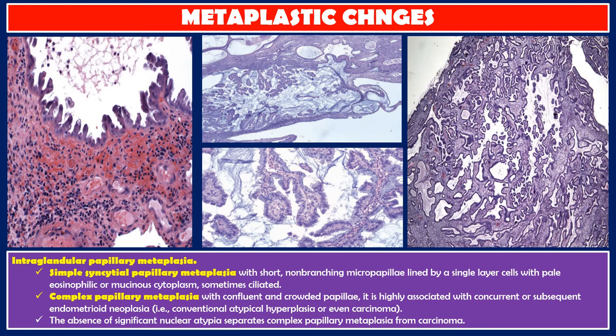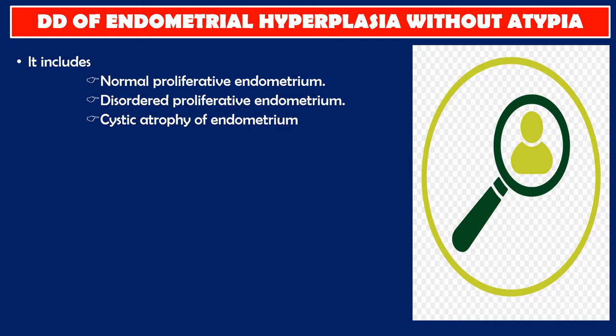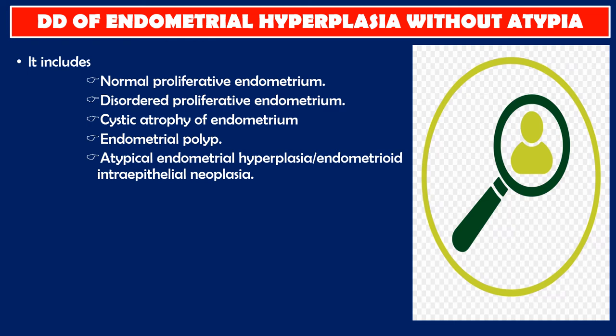Differential diagnosis of endometrial hyperplasia without atypia includes: normal proliferative endometrium, disordered proliferative endometrium, cystic atrophy of endometrium, endometrial polyp, atypical endometrial hyperplasia, and endometrioid intraepithelial neoplasia.